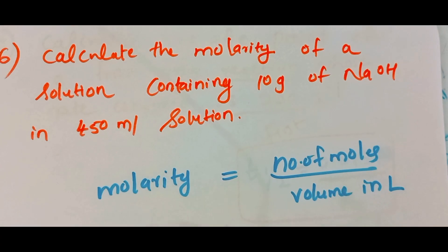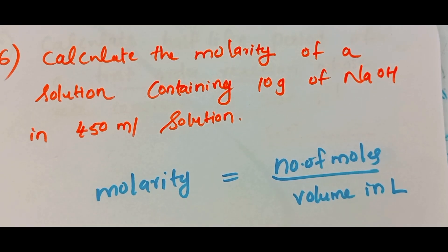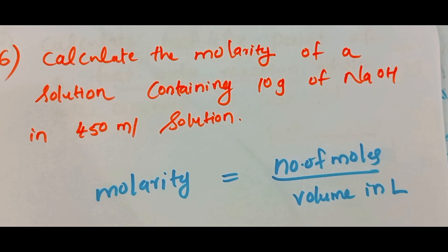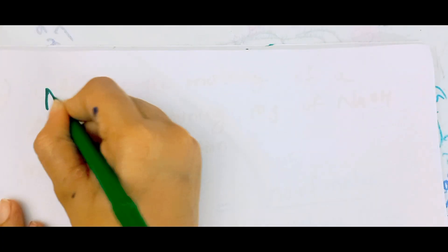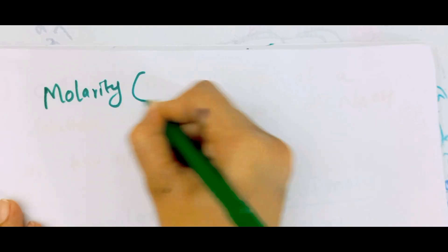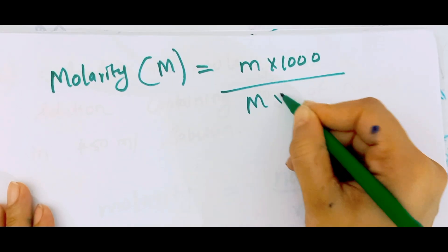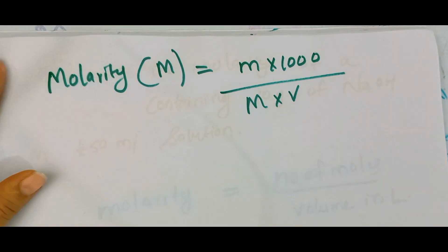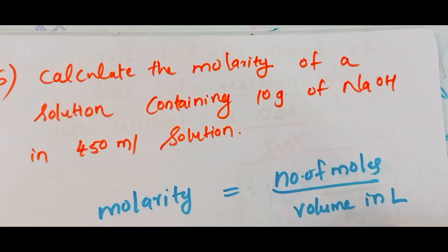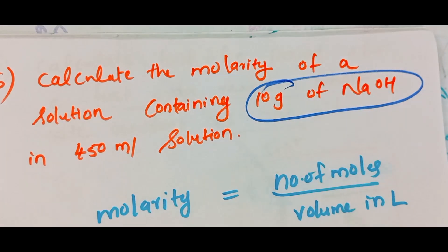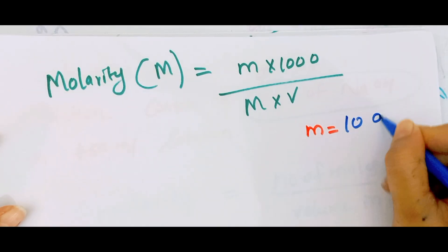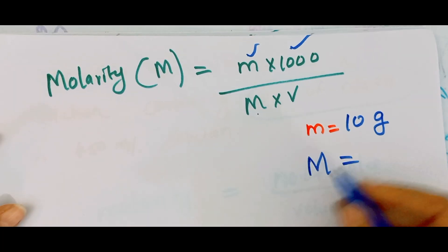Problem 6: Calculate the molarity of a solution containing 10 grams of NaOH in 450 mL solution. Using the molarity equation M = (w × 1000) / (M × V), where w is weight in grams, M is molar mass, and V is volume in mL.